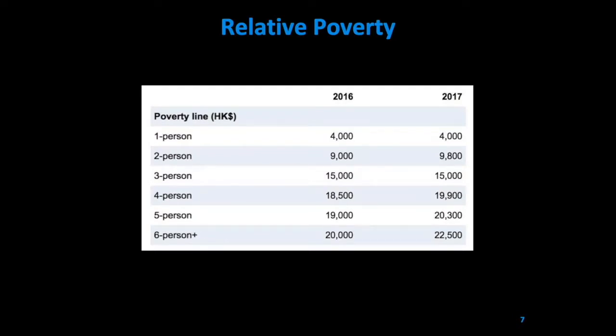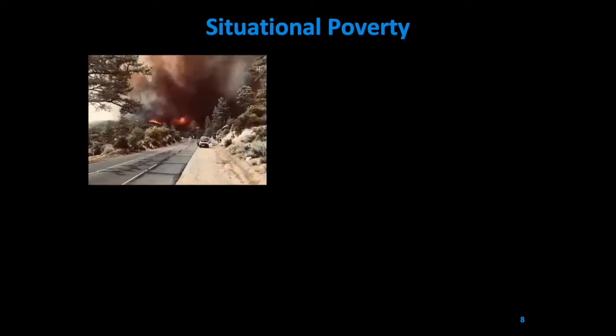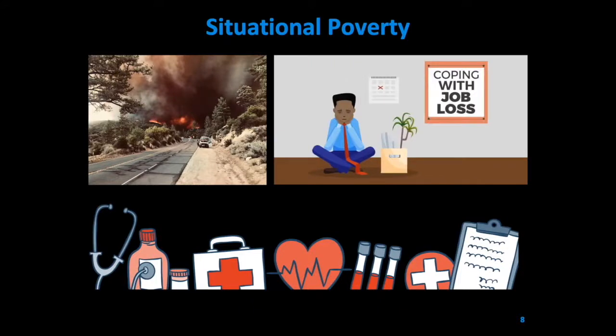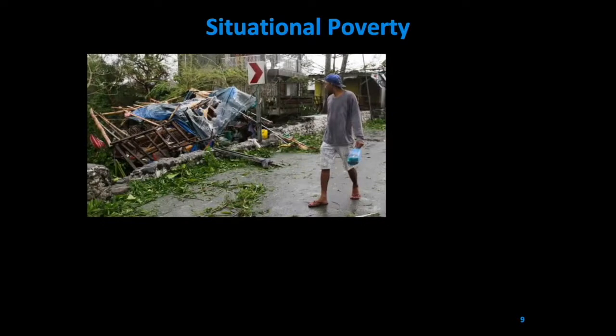There are some governmental interventions, such as the low-income working family allowance and governmental public housing. Next up, we have situational poverty. In this case, poverty is usually temporary and involves an unfavorable event — for example, an environmental disaster, health issue, or job loss. Those who may have suffered severe property loss in the Mongkut Typhoon may have experienced situational poverty.